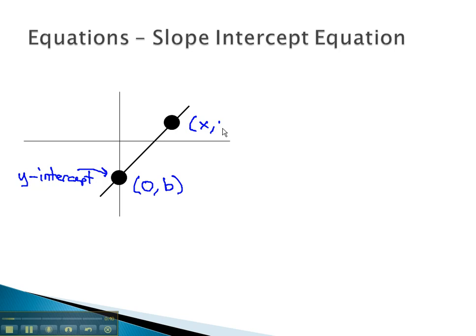The other point, let's just call x, y. I want to start by calculating the slope between these two points. Let's call the 0b, or the y-intercept, the first point, and the xy, the second point.